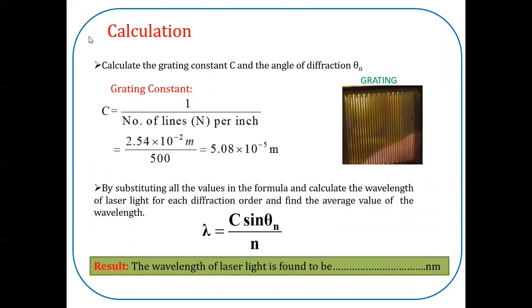Now I will show you how to calculate the wavelength of laser light. First, we have to calculate the grating constant. Already I have shown what is grating. Grating, it consists of n number of lines, drawn with the help of diamond tip. Distance between two consecutive lines called grating constant.